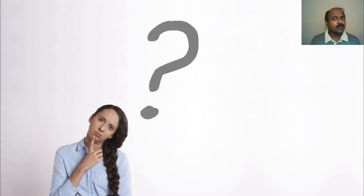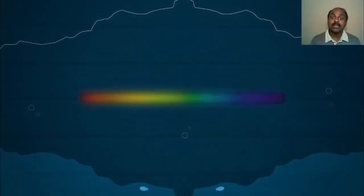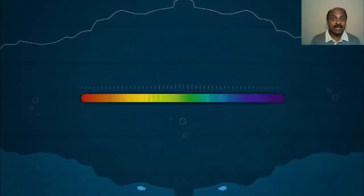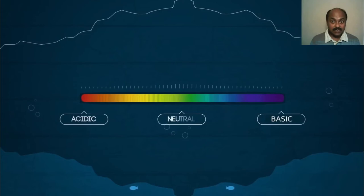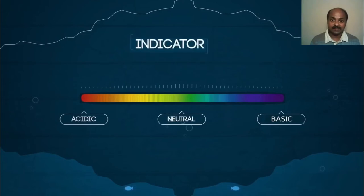Being acidic or basic is the chemical nature of a substance. And how do we find out whether a substance is acidic or basic? There are chemical indicators to indicate whether a substance is acidic or basic.